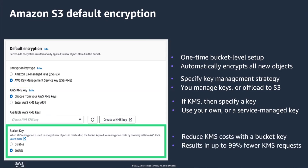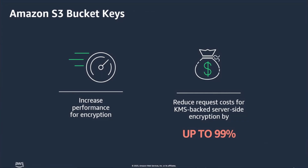If you want to use SSE-KMS, we strongly recommend you enable S3 bucket keys. S3 bucket keys are a cost-saving feature designed to help you lower your AWS KMS request cost by up to 99%. When you configure your bucket to use S3 bucket keys for SSE-KMS, AWS generates a short-lived bucket-level key from AWS KMS and then temporarily keeps that key in S3. This bucket-level key is used to encrypt new objects during its lifecycle, reducing the need for S3 to make requests to AWS KMS, allowing you to access AWS KMS-encrypted objects at a fraction of the previous cost.